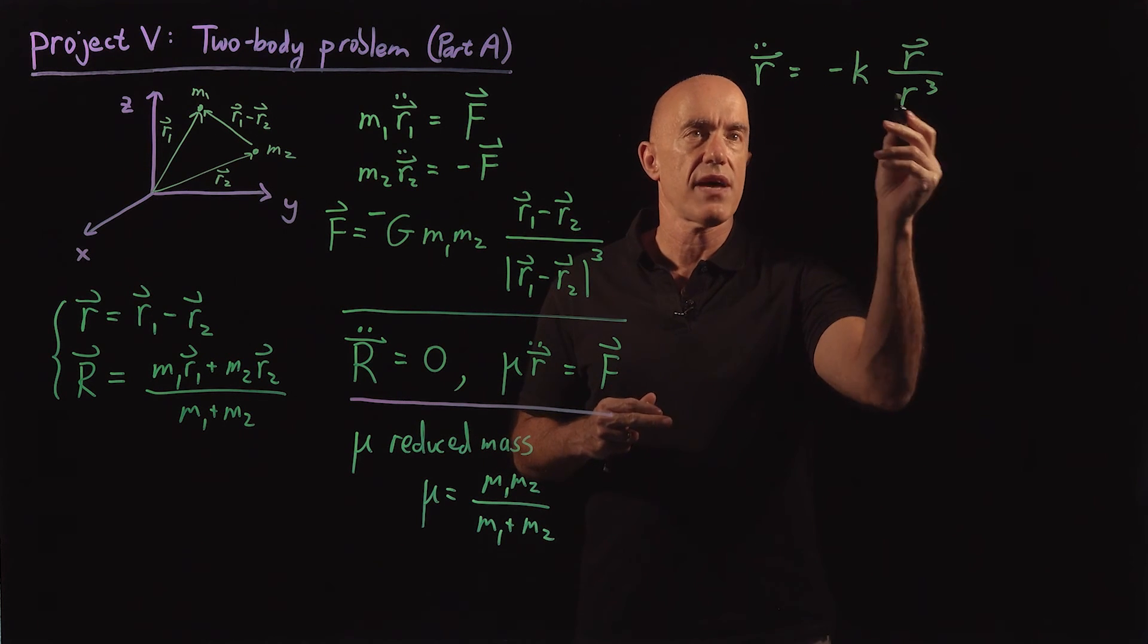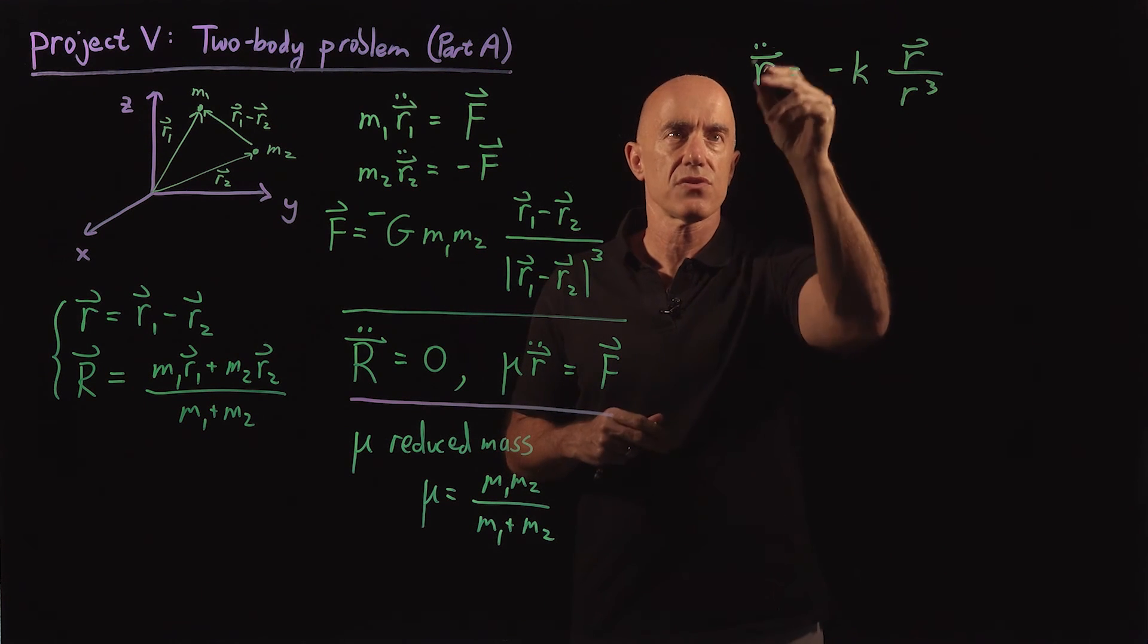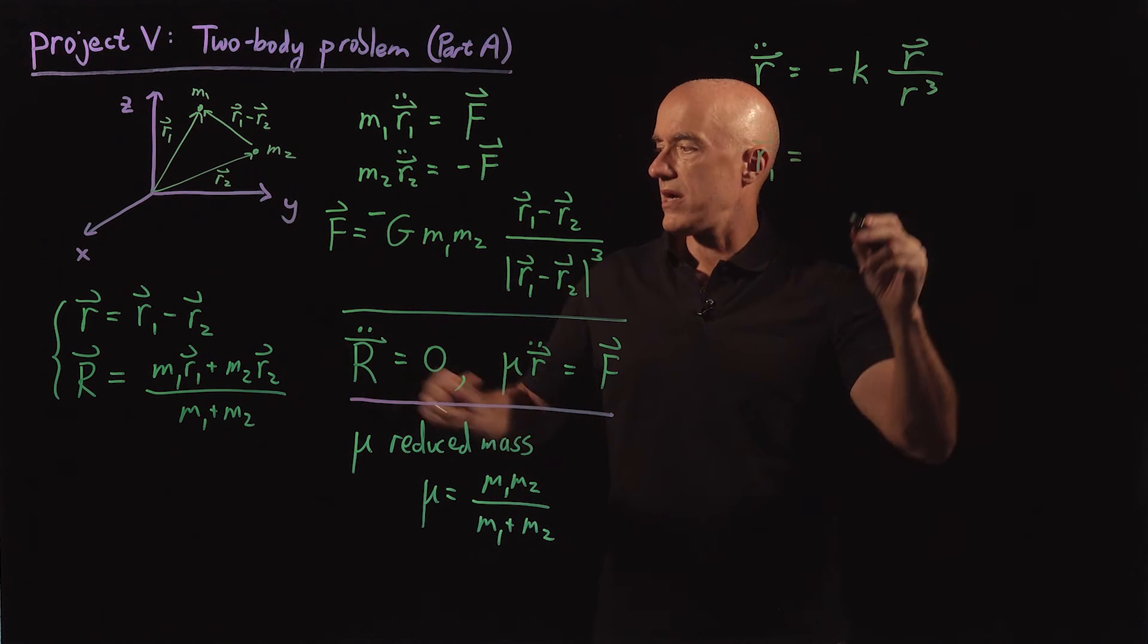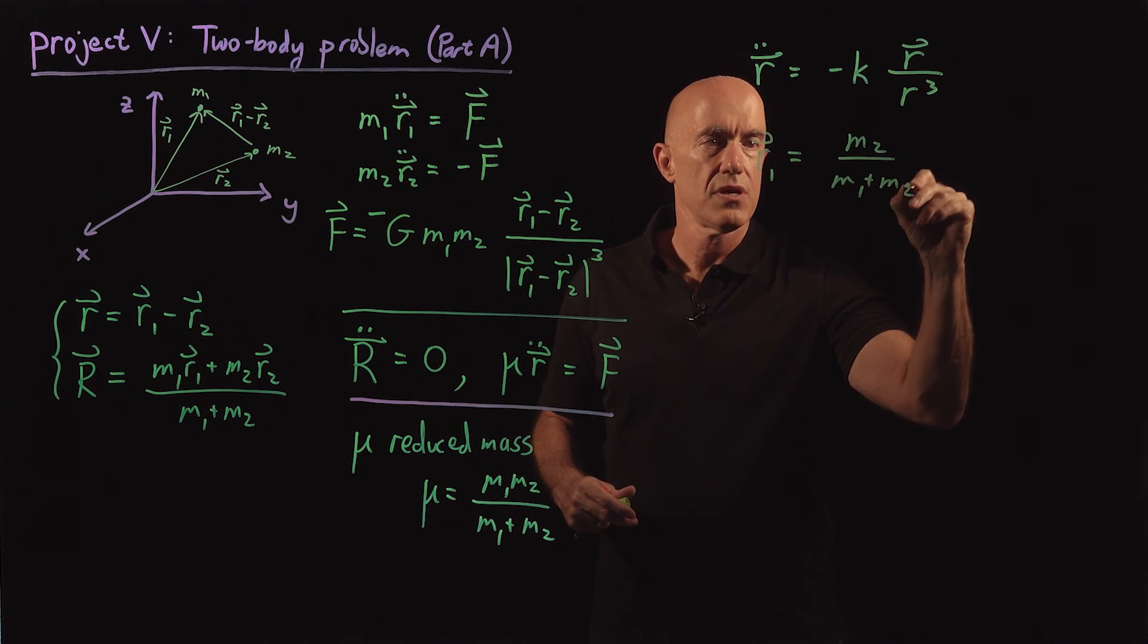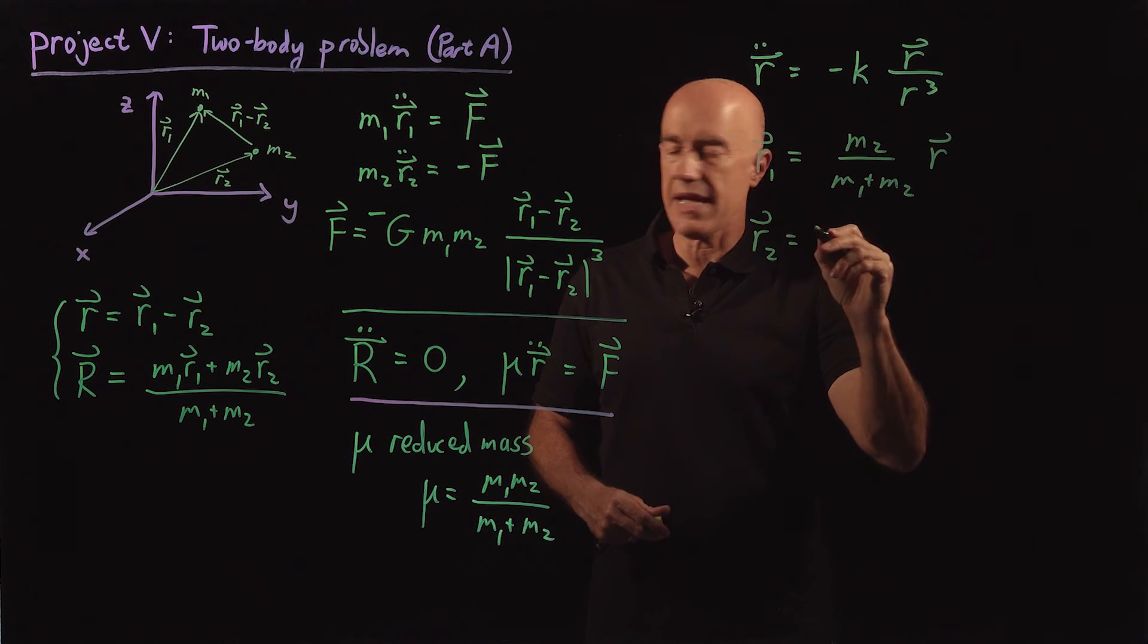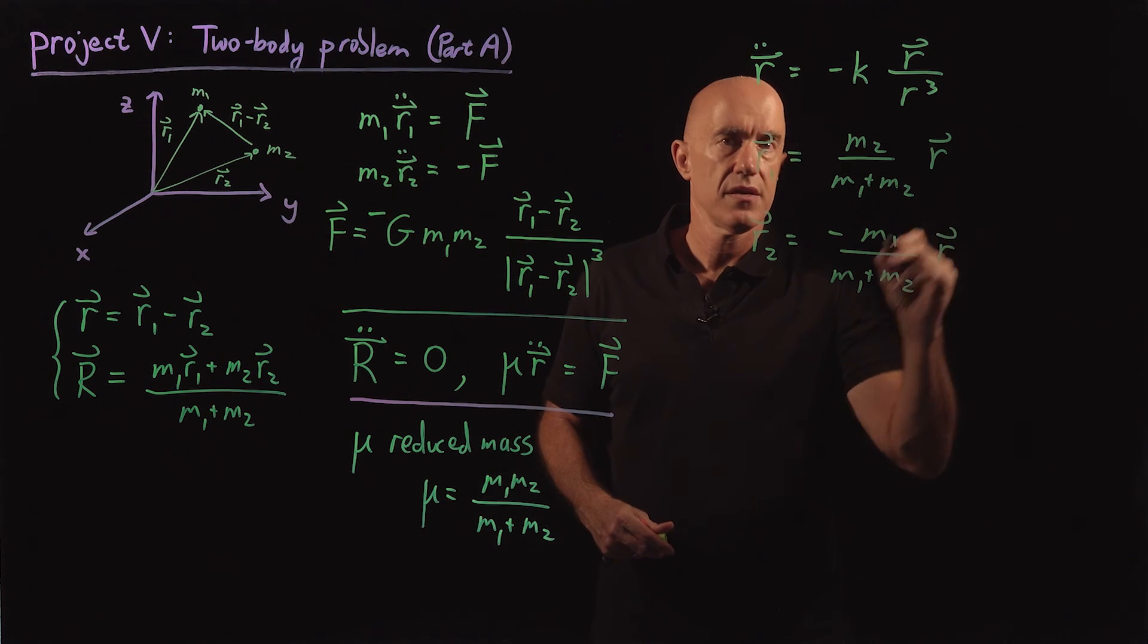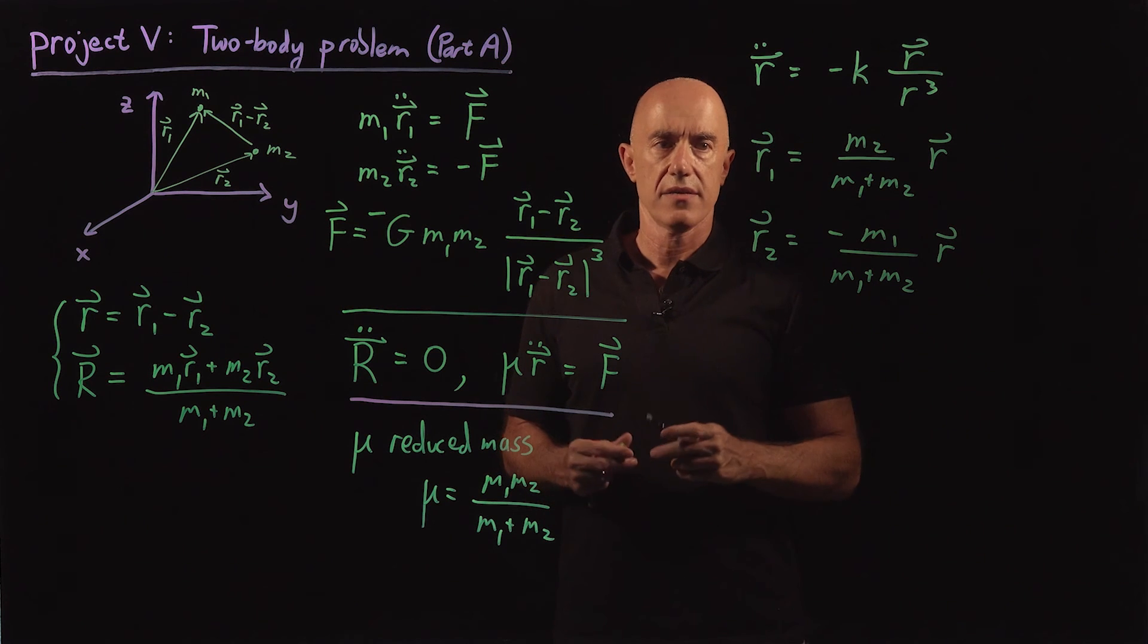So that will be the equation that we'll solve numerically. I'll show you how to solve that equation numerically in the next video. Once you have the solution for r, then we can recover r1. So r1 is just m2 over m1 plus m2 times r. We can solve for r1, and r2 is equal to minus m1 over m1 plus m2 times r. You see here that r1 minus r2 is equal to r.